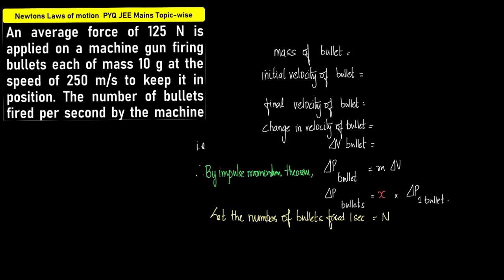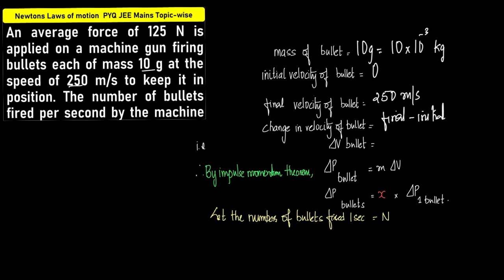So what is given to us: mass of bullet is 10 gram, which is 10 into 10 to the power minus 3 kilogram. What is the initial velocity of bullet? It is zero. What is the final velocity of bullet? It launches out at 250 meter per second. So what is change in velocity of bullet? It is final velocity minus initial velocity.